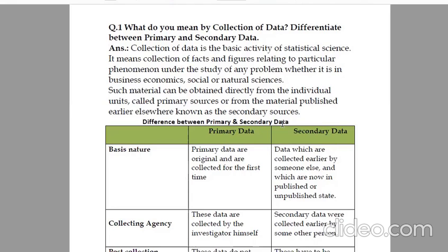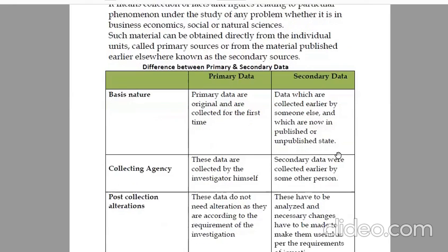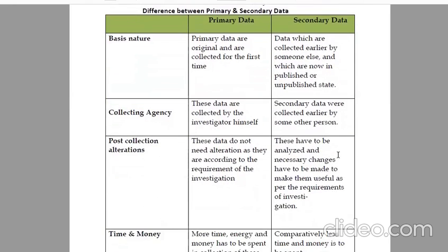Difference between primary and secondary data. Basic nature: primary data are original and are collected for the first time. These are the original information. Secondary data are collected earlier by someone else and are now in published or unpublished state.